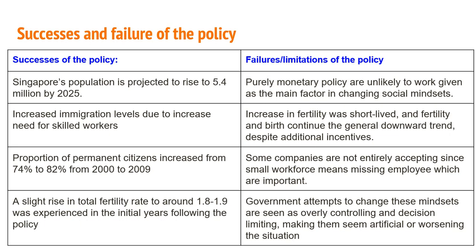This policy has certain successes and failures. Looking at the successes: Singapore's population is projected to rise to 5.4 million by 2025. Increased immigration levels have addressed the need for skilled workers. The proportion of permanent citizens increased from 74% to 82% between 2000 and 2009. A slight rise in total fertility rate, from around 1.8 to 1.9, was experienced in the initial years following the policy.